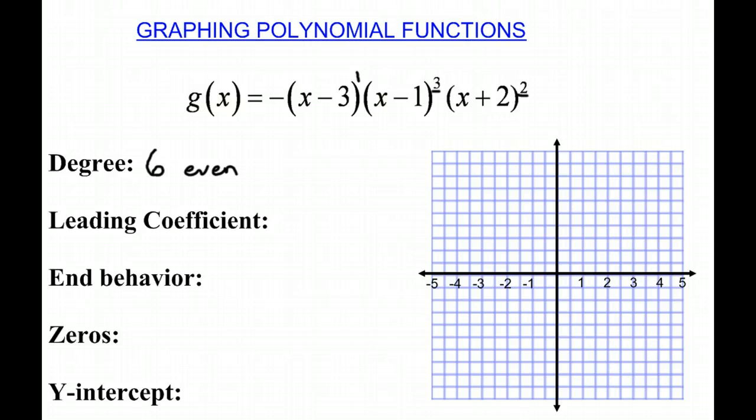Then we want to look at our leading coefficient, which is a negative 1. So the end behavior of an even degree negative is going to be decreasing on both sides. So from the left and the right, we're going to be decreasing.